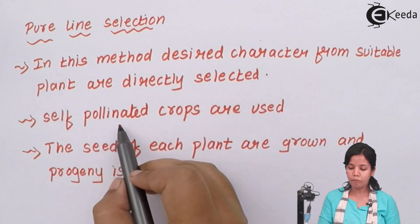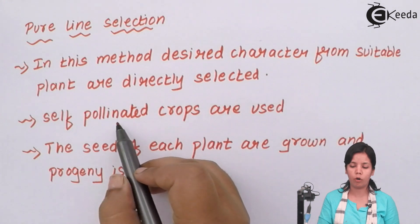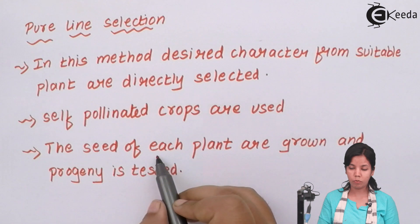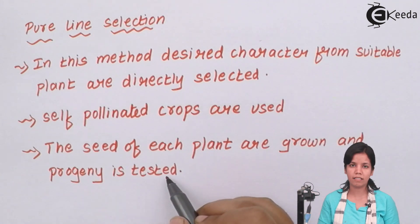Since self pollinated crops have specific characters as compared to cross pollinated crops. The seed of each plant or the selected variety are grown and the progeny is tested.